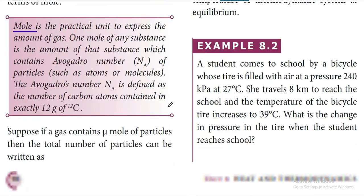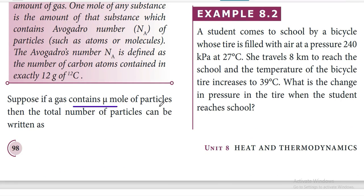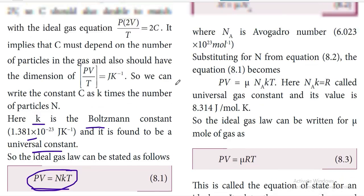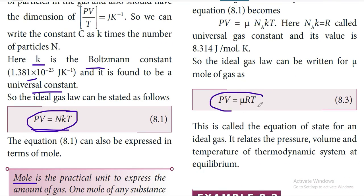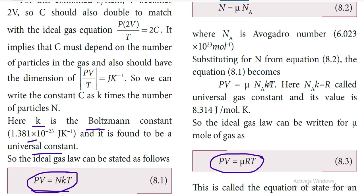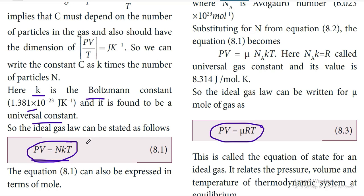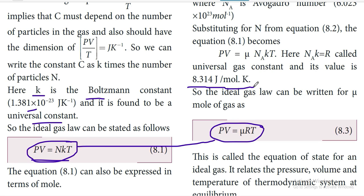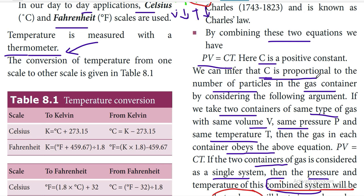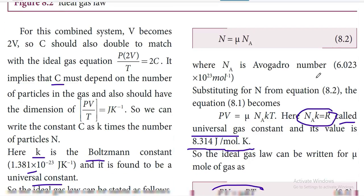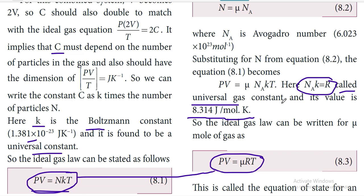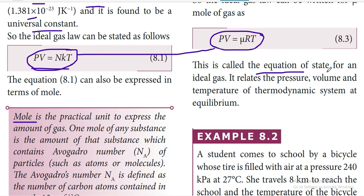If a gas contains μ moles of particles, the derivation gives the equation PV = μRT. The problems in the examination will be based on PV = NkT and PV = μRT. R is called the universal gas constant and C is the proportionality constant. This equation is called the equation of state for an ideal gas — it relates pressure, volume, and temperature of thermodynamic systems at equilibrium.